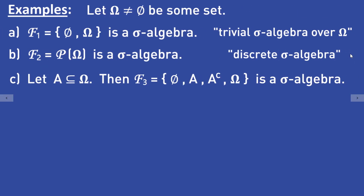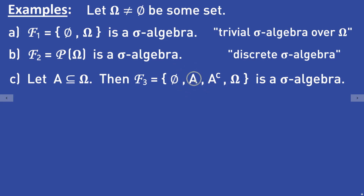Let A be a subset of omega. Then the set consisting of the empty set, the set A, the complement of A, and the set omega is a sigma algebra.